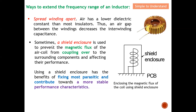Next, we can use a shield enclosure. This prevents the magnetic flux of the air coil from coupling to surrounding components, which would affect their performance. When you coil an inductor, you want a desired inductance value; however, some magnetic flux can couple to neighboring components, making the L value in henries inaccurate. Using a shield enclosure fixes most parasitic effects and contributes to more stable performance characteristics.